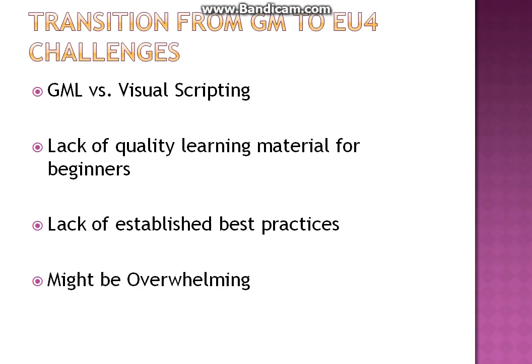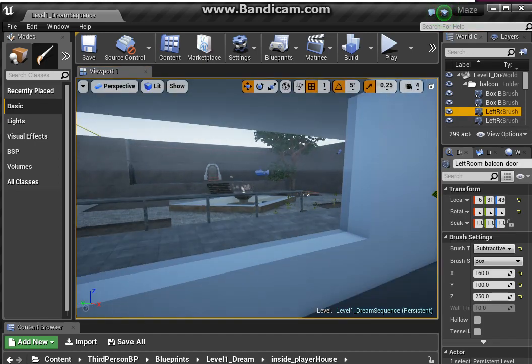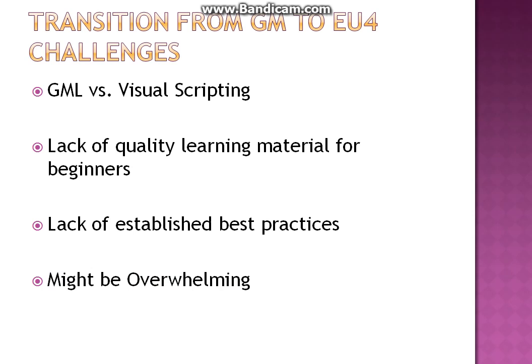In GameMaker Studio, the standards are already set, so by following the documentation, tutorials, and examples, you get those best practices. But in Unreal Engine 4, I had to do a lot of experimentation. Also, you must be aware that there is a lot more to the engine since it's primarily a 3D engine, so when you first start it up there is a lot more to take in — it might be a little overwhelming in the beginning.